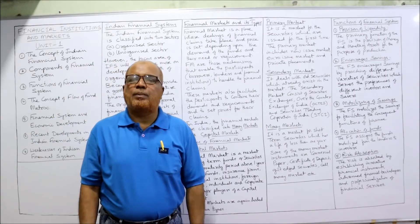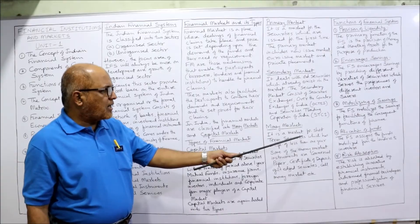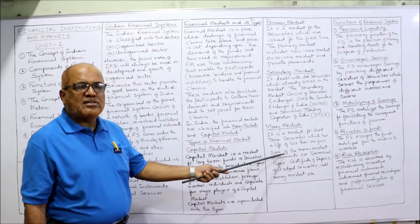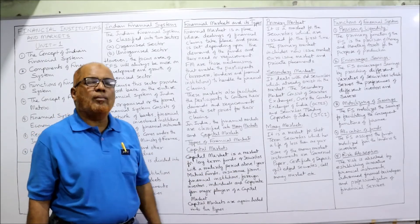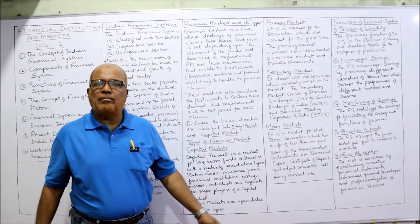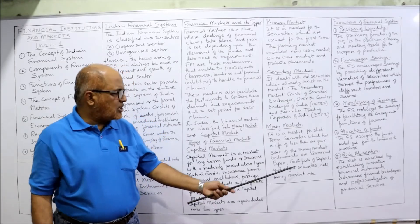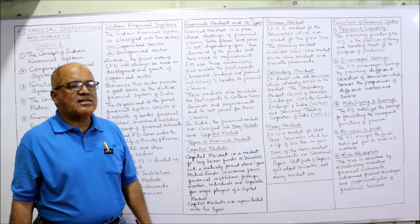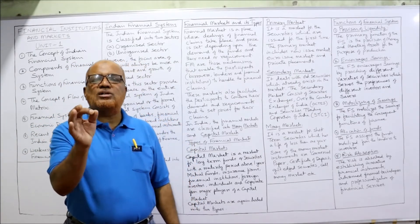Business houses require funds for both long-term and short-term purposes. The money market is a market for short-term securities with a life of less than one year. Some money market instruments include commercial paper, certificate of deposit, gilt-edged securities, and call money market. These are the instruments dealt in the money market for short-term borrowing and lending purposes.